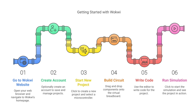Start building your circuit by dragging and dropping components from the sidebar. Connect them as needed and set up the wiring. After that, you can write code using the built-in editor. The Vokvi platform supports different programming environments for Arduino and MicroPython. Finally, run the simulation — there is a start button to see your project come to life. You can modify the circuit and code and test changes in real time.